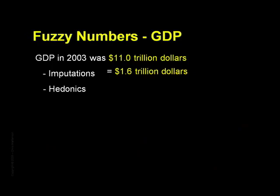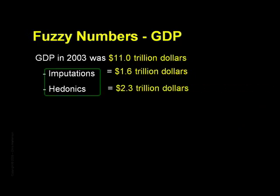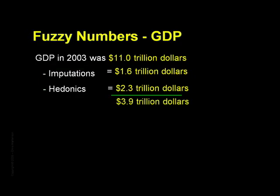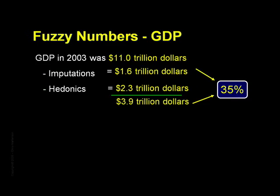What were the total hedonic adjustments in 2003? An additional whopping $2.3 trillion. Taken together, these mean that $3.9 trillion — or fully 35% of our reported GDP — was not based on transactions that you could witness, record, or touch. They were guessed at, modeled, or imputed, but they did not show up in any bank accounts because no cash ever changed hands.